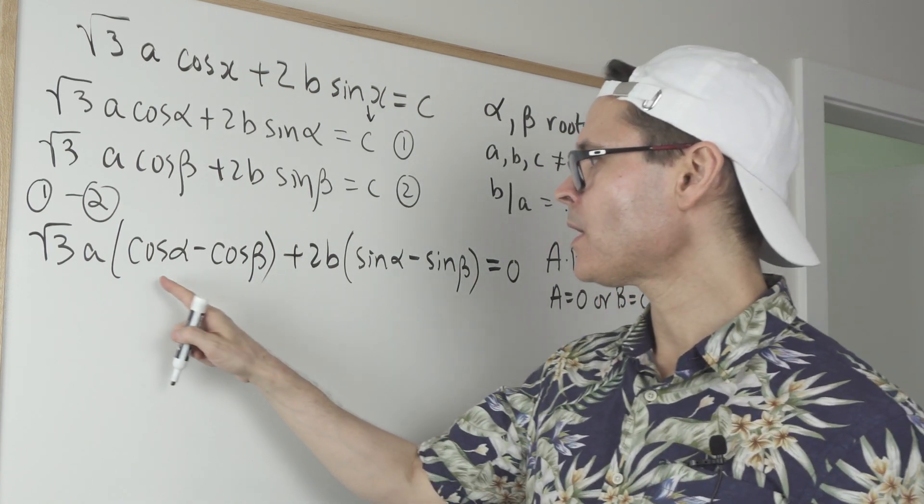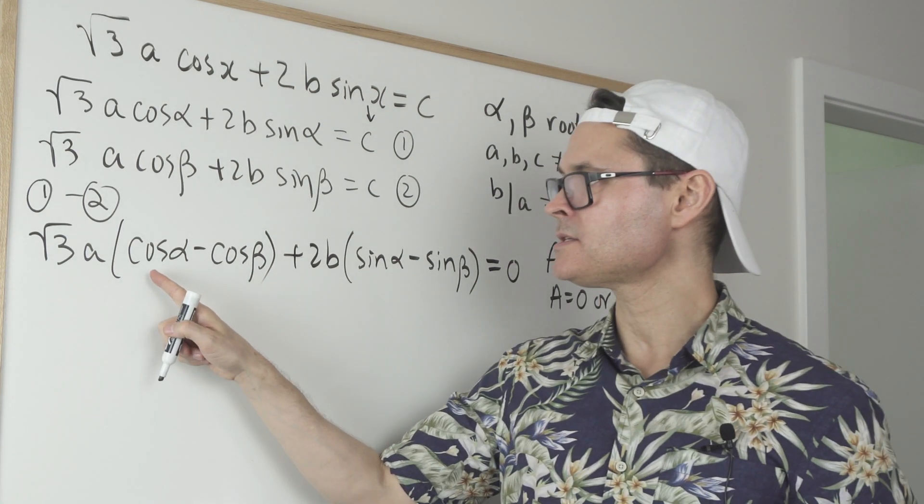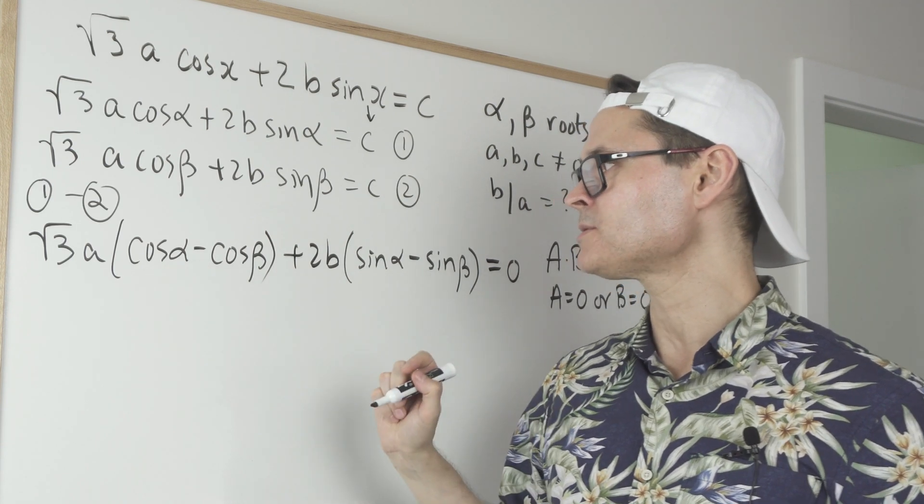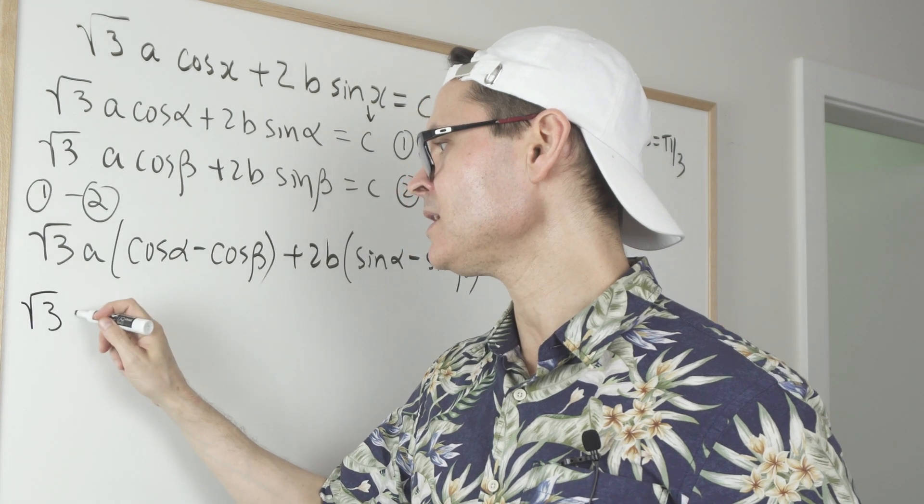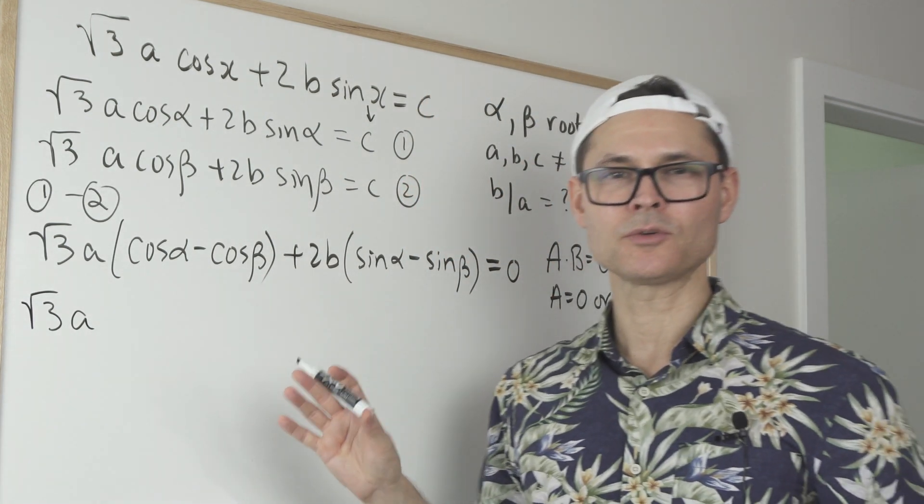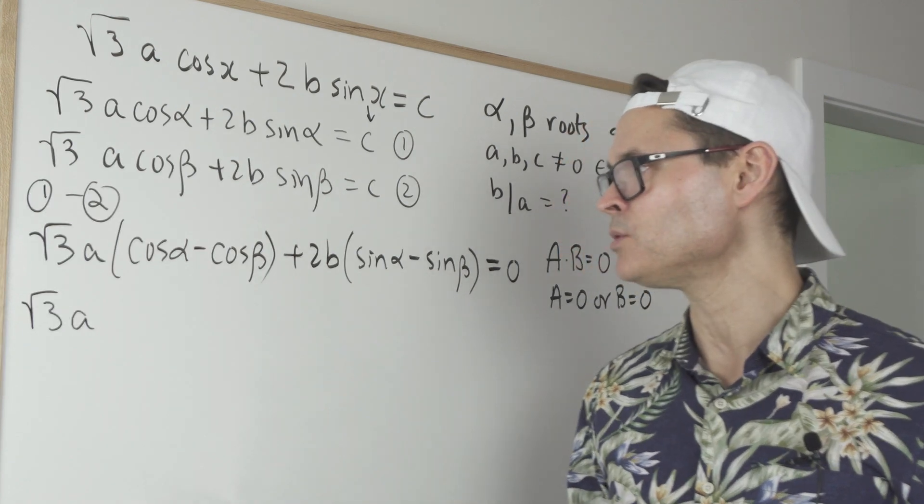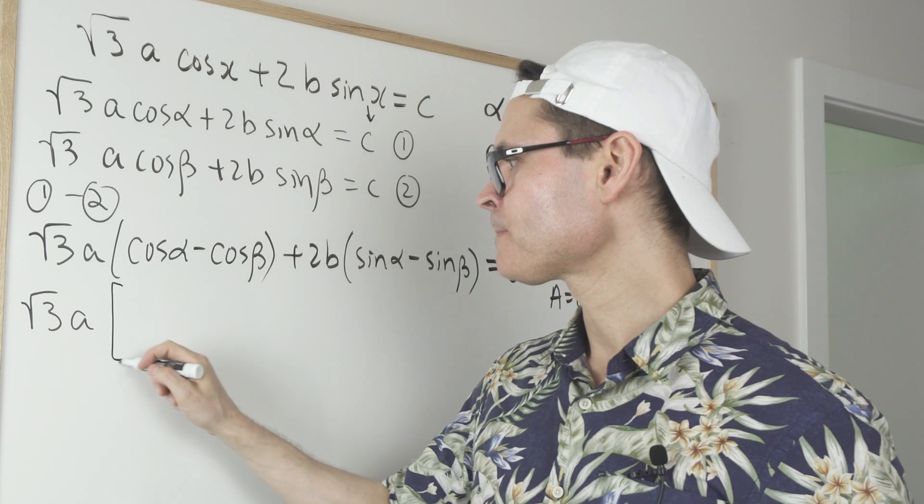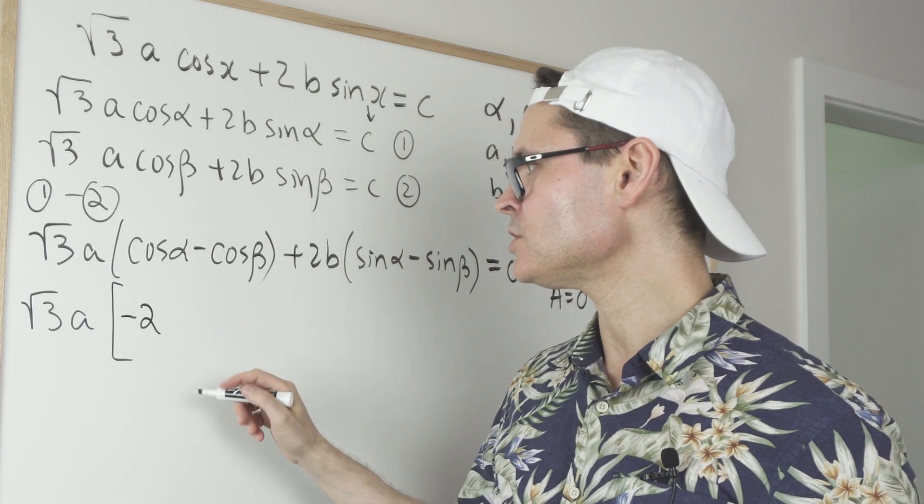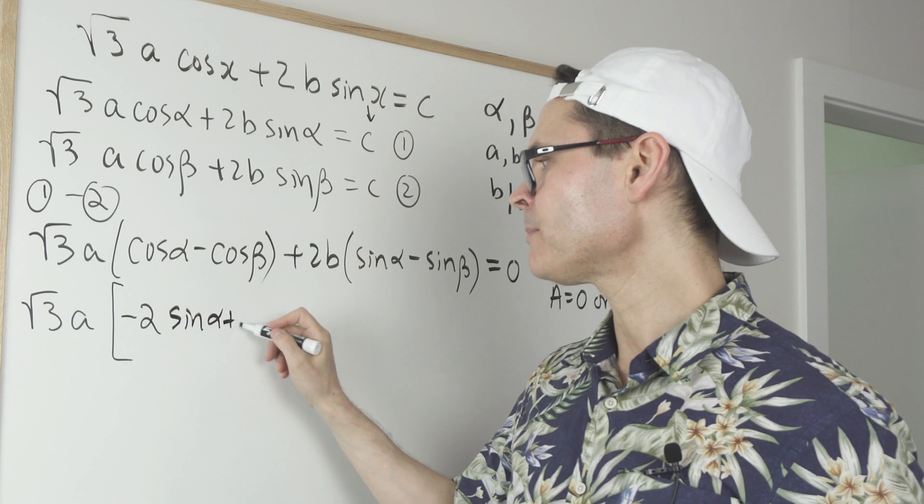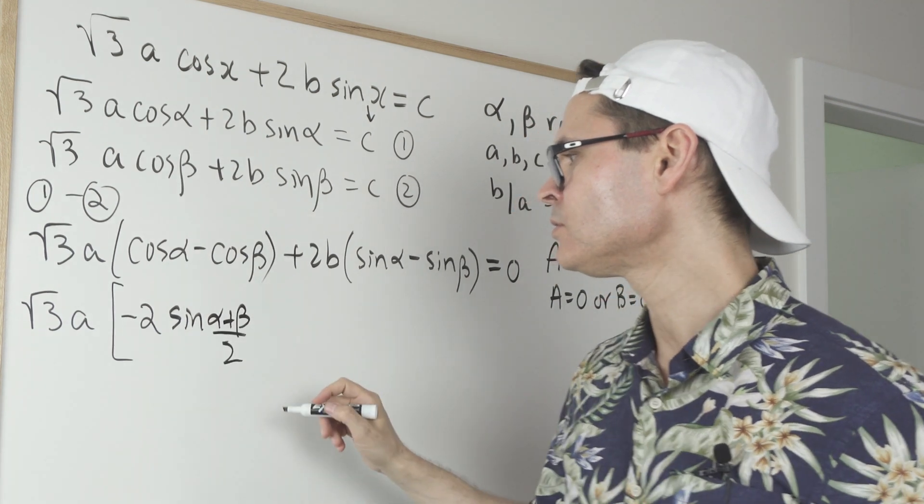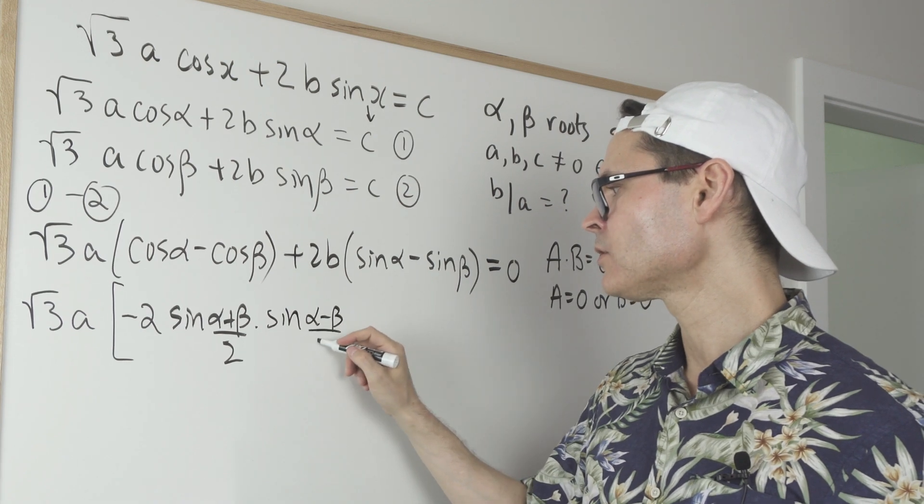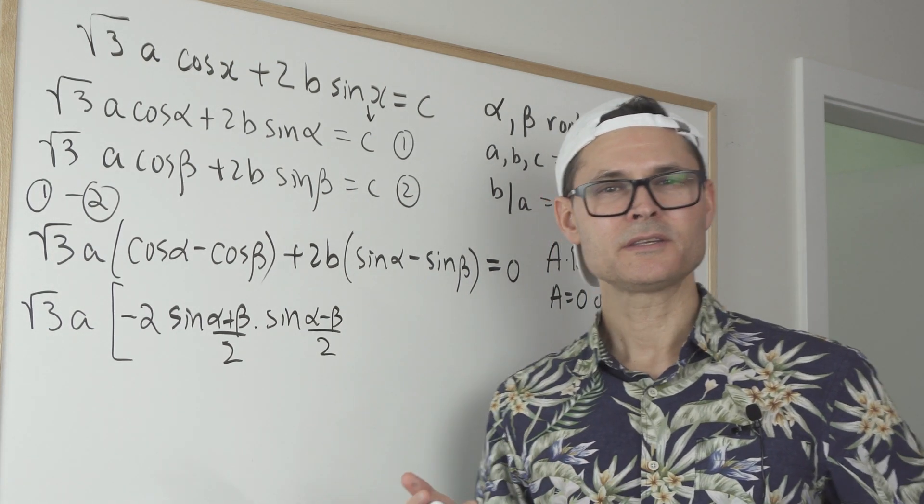So I do know that there is a sum to product conversion for cos α minus cos β. So it's going to be this, √3A. I'm confident just to write this down and not derive it because usually these are issued on most big tests. So cos α - cos β is actually equal to -2 sine(α+β)/2 times the sine of (α-β)/2. Okay, that's just a direct substitution.